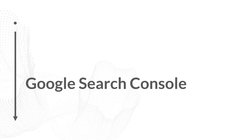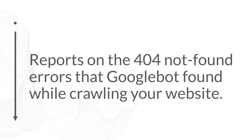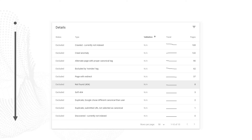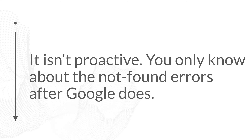Finally, let's talk about Google Search Console and how to use it to find 404s on your website. Google Search Console reports on 404 not found errors that Googlebot found while crawling your website or the web, including broken backlinks referencing 404s. To find this, go under the coverage reports, go to excluded, and look for any not found errors. In this case, we have eight not found errors that Googlebot found. The biggest problem is that this isn't proactive — you're only finding out about those 404 errors after Google already found them and factored them into their evaluation of your pages.